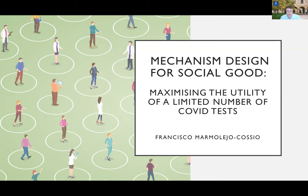Prior to this, he was a career development fellow in computer science at Balliol College at the University of Oxford. He completed a DPhil in theoretical computer science under the supervision of Paul Goldberg, and a BA in mathematics at Harvard University with a minor in neuroscience in 2012. His academic interests lie in the intersection of algorithmic game theory, decentralized consensus protocols, and computational learning theory. He is also a co-organizer of the Mechanism Design for Social Good Research Initiative, and today he's going to be telling us about his work on maximizing the utility of a limited number of COVID tests. Thanks very much, Francisco.